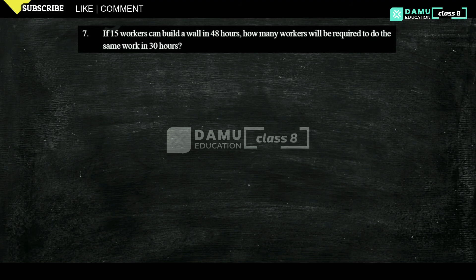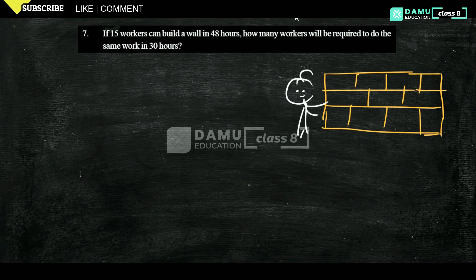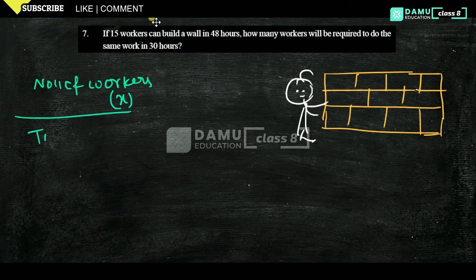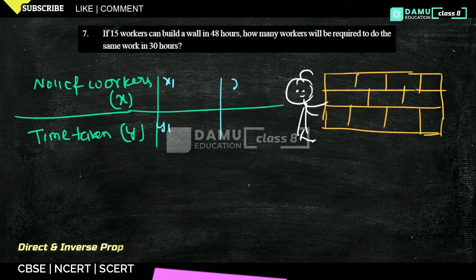Our next question is: if 15 workers can build a wall in 48 hours, how many workers are needed to build the same wall in 30 hours? Let's take the number of workers as X and the time taken to build the wall as Y. We write X1, Y1 and X2, Y2.